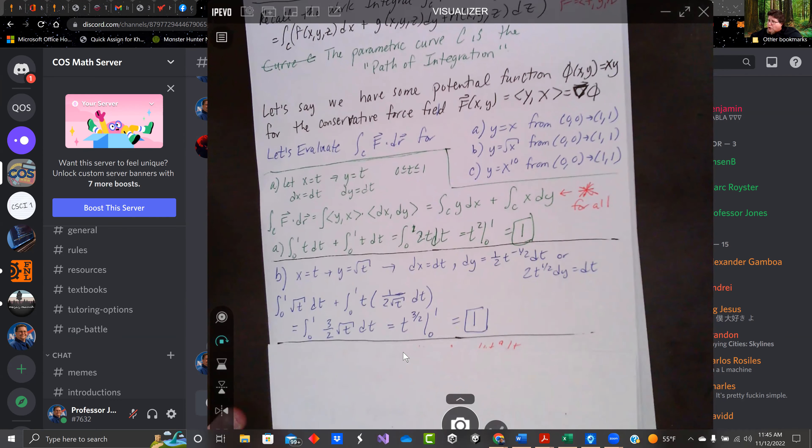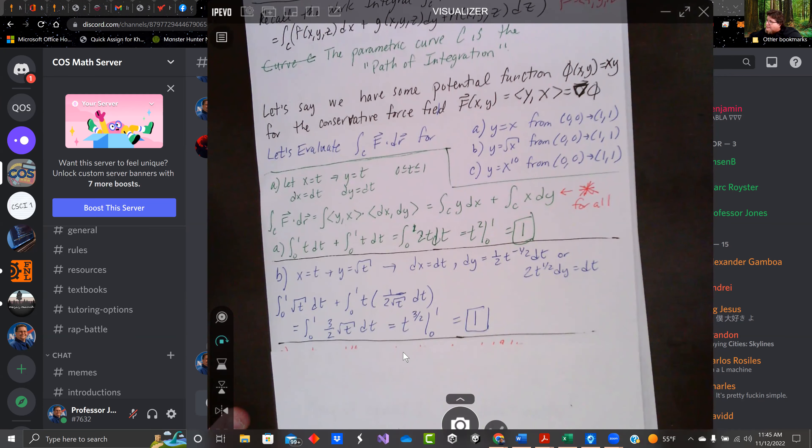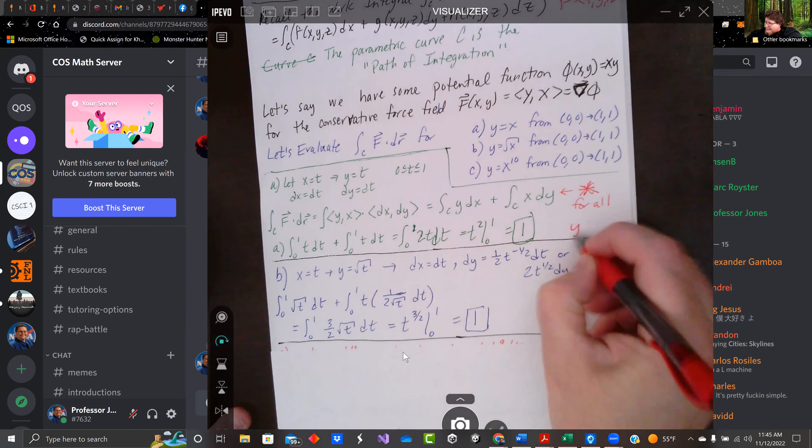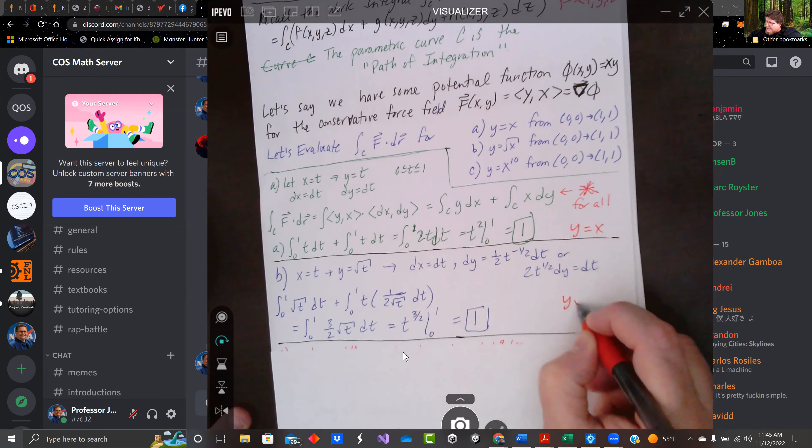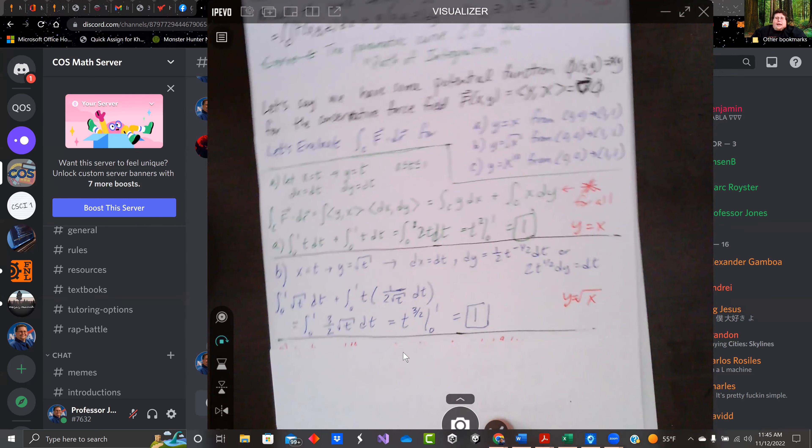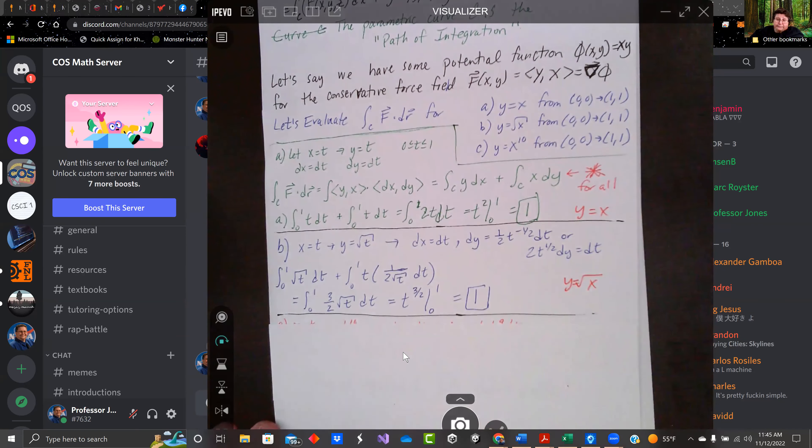Let's look at the same integral along y equals square root of x. That was y equals x. Here we're doing y equals square root of x. So if x equals t, y equals the square root of t. And that leads to dx equaling dt. And dy equaling one half t to the negative one half dt. And when we plug that in, our y dx becomes square root of t dt. Our x dy becomes t times one over two root t dt.